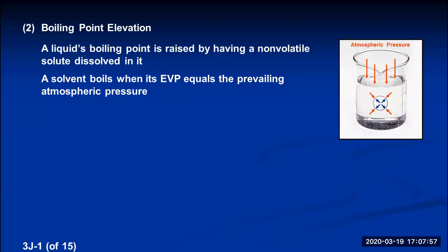For water, water has an equilibrium vapor pressure of 760 torr at 100 degrees Celsius. Because 760 torr is natural atmospheric pressure, this is the temperature that water boils at sea level on Earth. So water boils when equilibrium vapor pressure equals the atmospheric pressure.